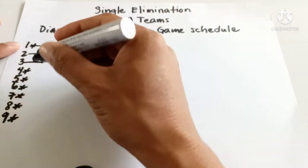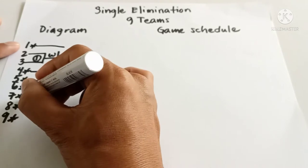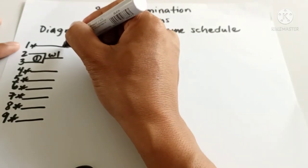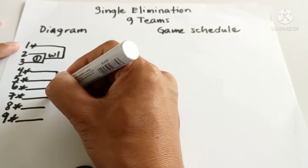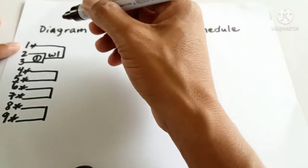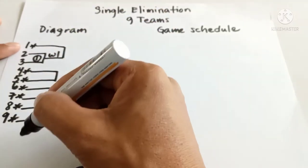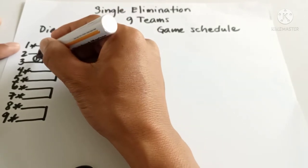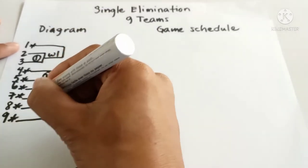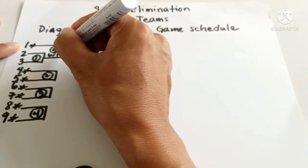From the top, let's proceed to game numbering. In round one we have game one. Now let's proceed to round two: game two, game three, game four, and then game five. Now let us have the result.